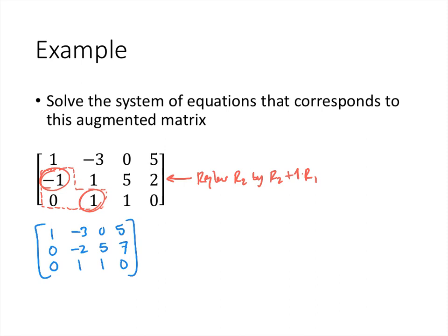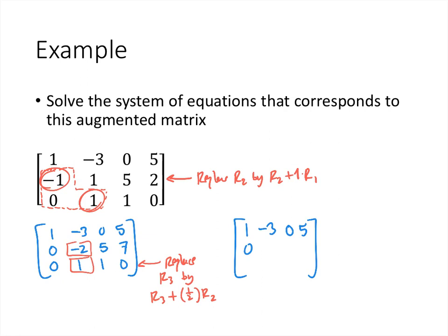Now we need to turn the remaining position into a 0 without wrecking the zeros in the first column. We'll use the negative 2 in row 2 to turn the 1 in row 3 into a 0. We replace row 3 by row 3 plus one-half times row 2. Multiplying by one-half turns the negative 2 into negative 1, and adding gives 0. Row 1 stays: 1, negative 3, 0, 5. Row 2 stays: 0, negative 2, 5, 7. For row 3: one-half times negative 2 is negative 1, plus 1 is 0; one-half times 5 is 5/2, plus 1 is 7/2; one-half times 7 is 7/2, plus 0 is 7/2.